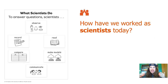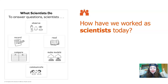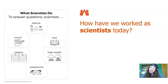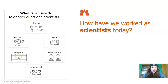How have we worked as scientists today? Let's look at our list of things that scientists do. Did we observe today? Yep. Did we record today? Yep. Did we compare temperatures today? Yep. Did we communicate our ideas today? Yep. Did we make models? We didn't make any models today, but we did in the last lesson. Did we read anything today? We didn't read any books today. So we did four things scientists do, and didn't do two — but we definitely worked as scientists today.